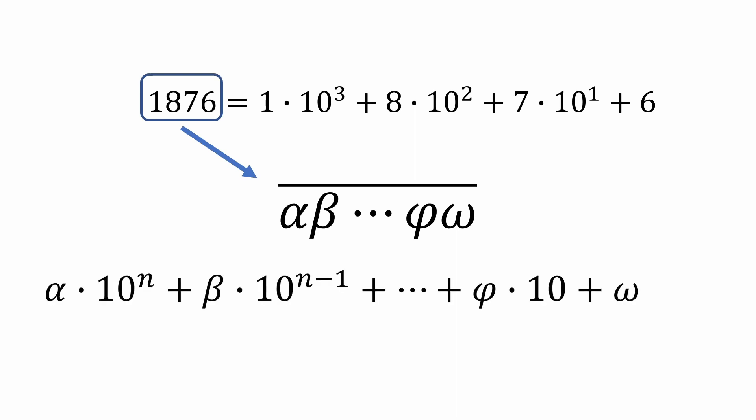So we would have alpha times 10 to the nth power, plus beta times 10 to the n minus 1 power, and so on, all the way to phi times 10, plus the unit's digit omega. Now let's set this number equal to a multiple of 7, since that's what we're investigating here.